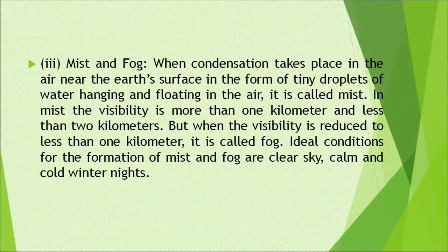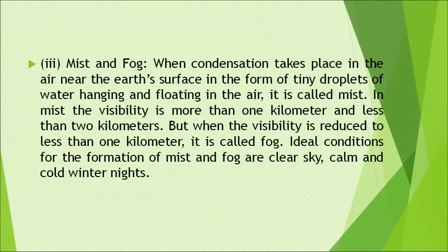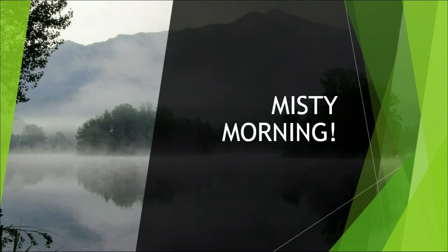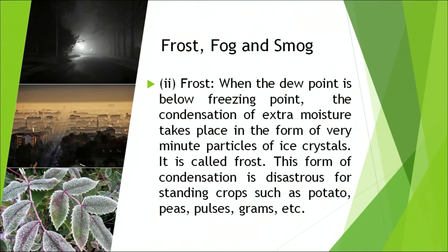Mist and fog: when condensation takes place in the air near the earth's surface in the form of tiny droplets of water hanging and floating in air, it is called mist. In mist, visibility is more than 1 kilometer and less than 2 kilometers. When visibility is reduced to less than 1 kilometer, it is called fog. Ideal conditions for formation of mist and fog are clear sky and calm, cold winter nights. Smog is a fog that has been polluted and discoloured by smoke, dust, carbon monoxide, sulfur dioxide, and other fumes. Smog frequently occurs in large cities and industrial centres and causes respiratory illnesses. These pictures depict all three condensation forms: frost, smog, and fog.